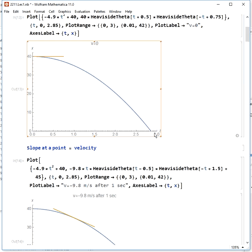we see that it takes just under three seconds to hit the ground, and if we look at this first instant, the slope of the line right here at the beginning is zero, so the velocity is zero when we start.